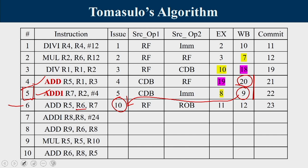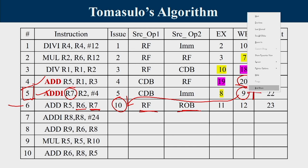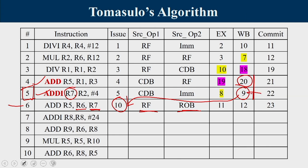Instruction 6 is issued at cycle 10. R6 is in the register file. R7 was produced at cycle 9 and is available in the reorder buffer at cycle 10. So R7 is taken from the reorder buffer. Execution starts at cycle 11, completes in cycle 11, write-back at cycle 12, and commit at cycle 23.